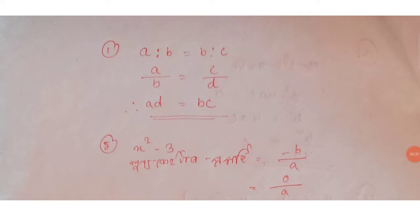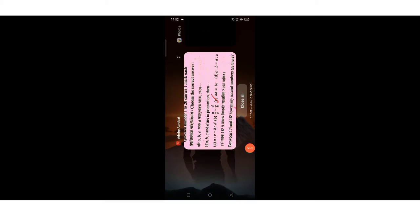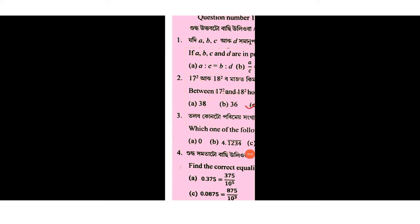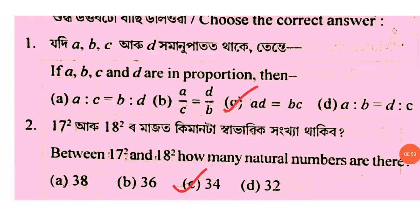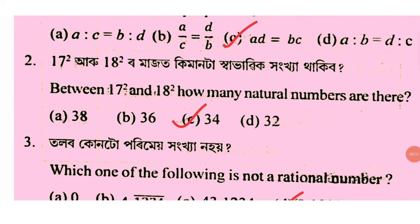The next question is: A, B, C, R, U, D, and C to A, D equal to B, C to A, D equal to B, C to A, D equal to B, C.